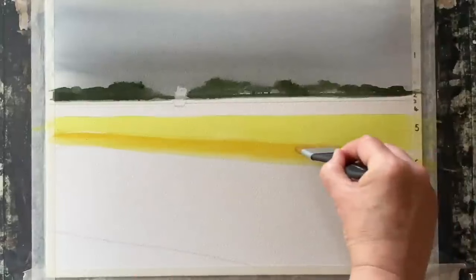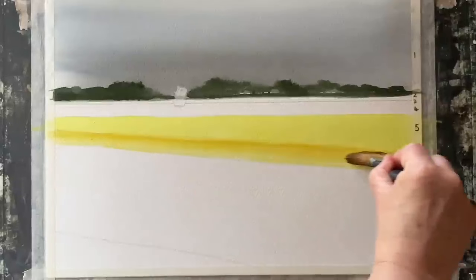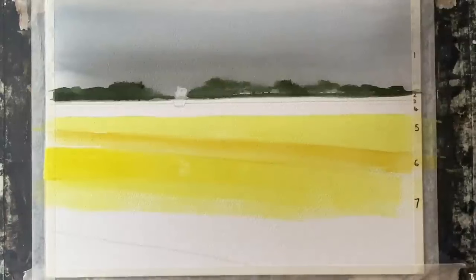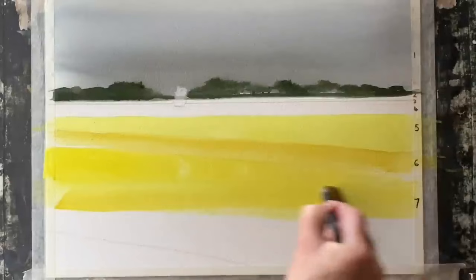I'm not going to paint right under my distant trees yet. I'm going to wait for that to dry completely because I don't want the distant tree line running into my pale yellow field. So I'm leaving that gap and continuing down towards the foreground, varying up the shades of my lemon yellow with a little bit of cad yellow, maybe a little bit of yellow ochre until I come down towards the front.